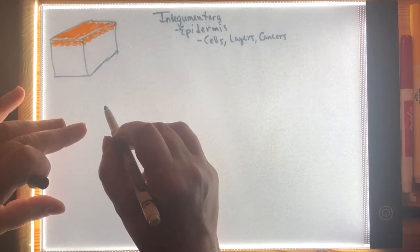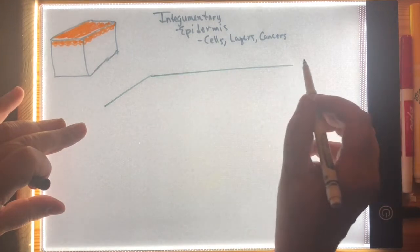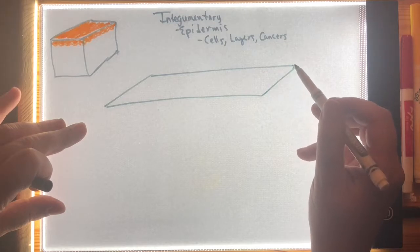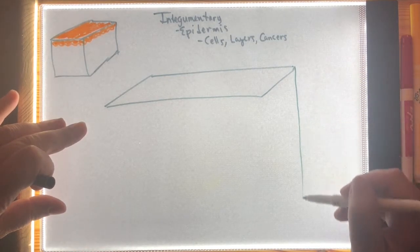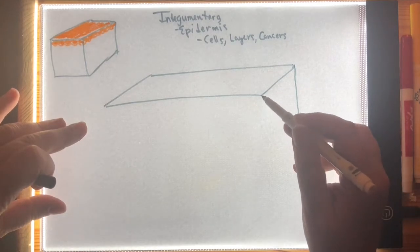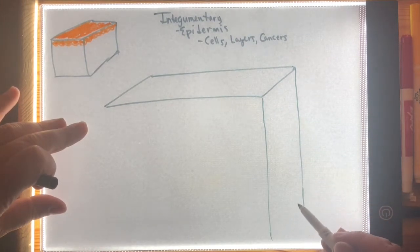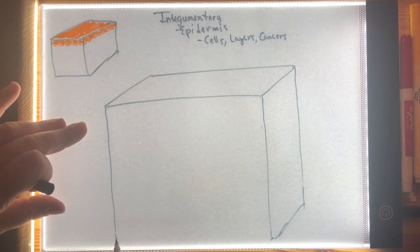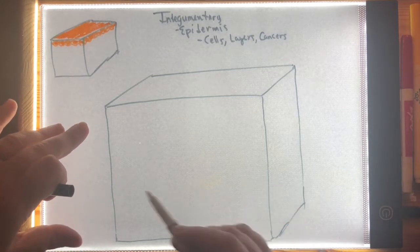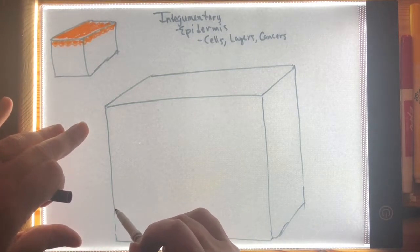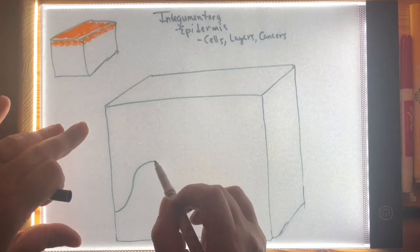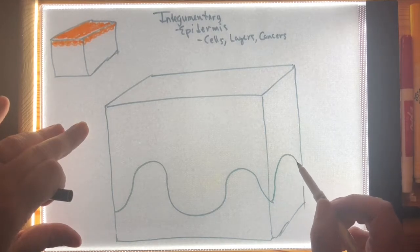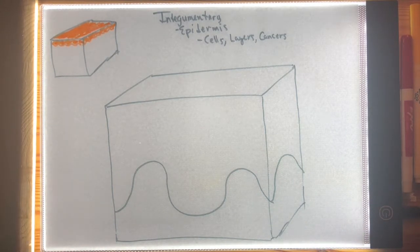We'll cover the dermis and hypodermis in a different video. Today we're focusing only on the epidermis. There's so much to say about the epidermis, and I really don't want the lessons to blend together. So we're going to pull this out and make another cube — we take a cube out of your skin — and we're just taking the most superficial layer so that we can take a closer look at the epidermis in isolation.